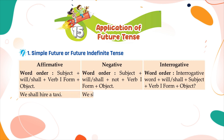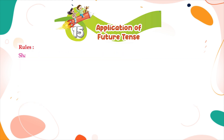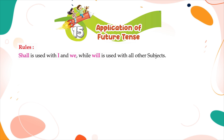Examples: We shall hire a taxi. We shall not hire a taxi. Shall we hire a taxi? You will go there. You will not go there. When will you go there? Rule: shall is used with I and we, while will is used with all other subjects.